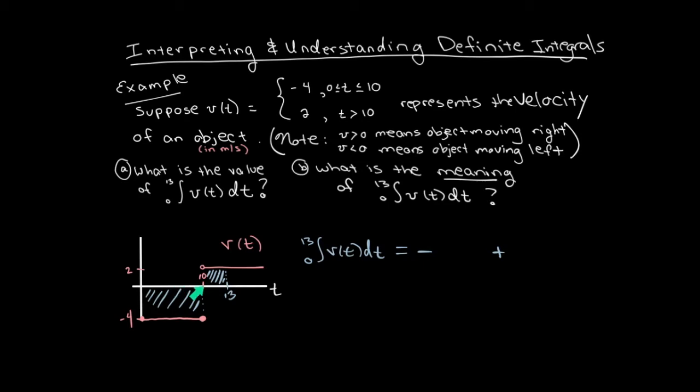The first rectangle has width 10 and height 4. The second rectangle has width 3 and height 2. So the value of the definite integral is negative 34.